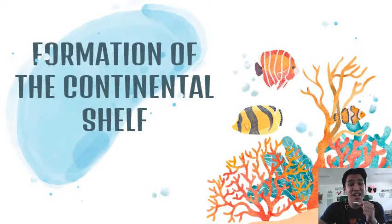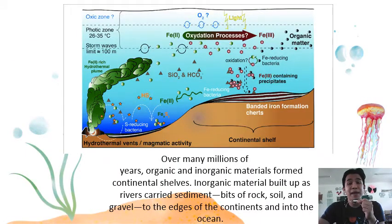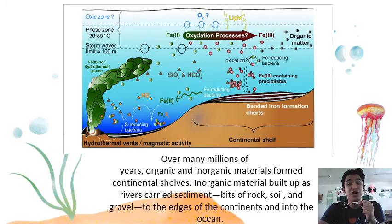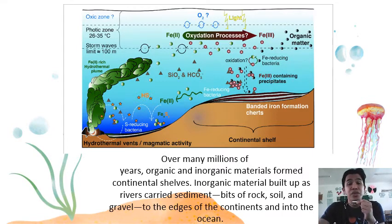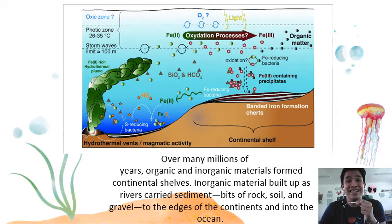How is the continental shelf formed? Over many millions of years, organic and inorganic materials form continental shelves. Inorganic material built up as rivers carried sediments — bits of rock, soil, and gravel — to the edges of the continents and into the ocean, where they gradually accumulated in layers. Organic materials, such as the remains of plants and animals, also accumulated.